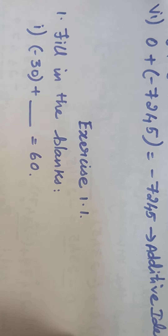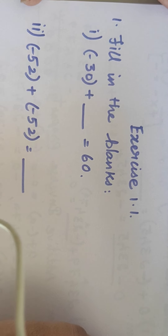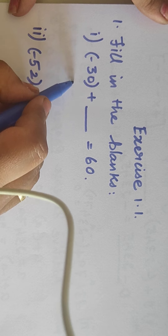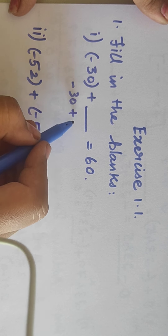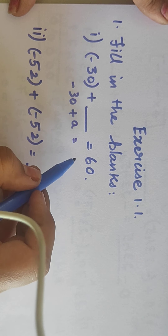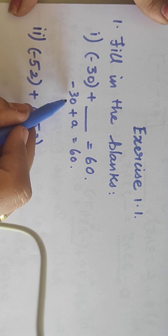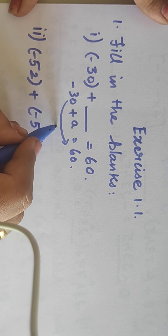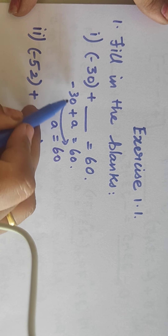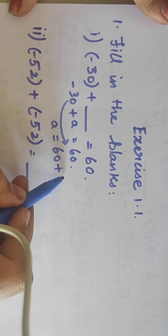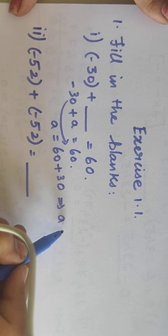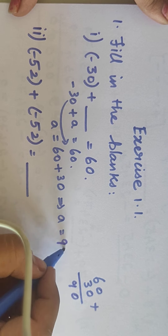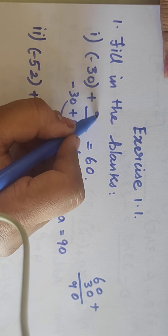Now we are going to see Exercise 1.1, first one — fill in the blanks. (-30) plus dash equals 60. First we give the dash a name, say A. So (-30) plus A equals 60. We change minus 30 to the other side — it becomes plus 30. So A equals 60 plus 30, which equals 90. The answer is 90.